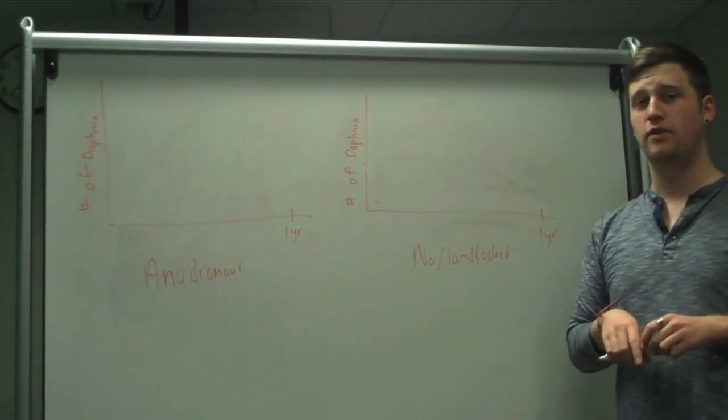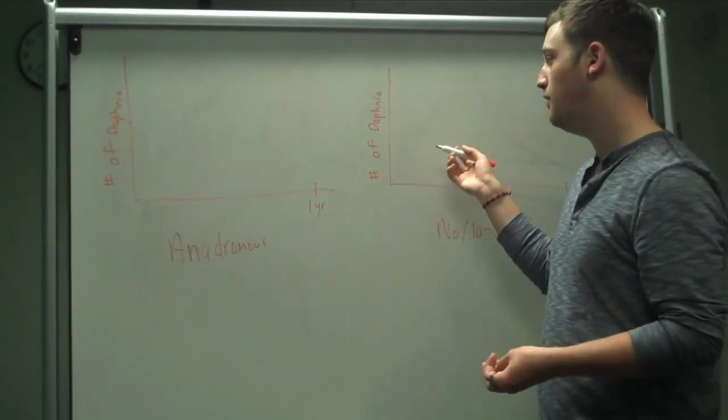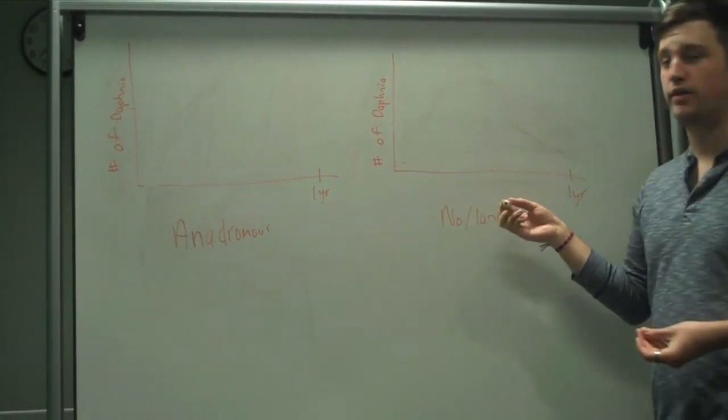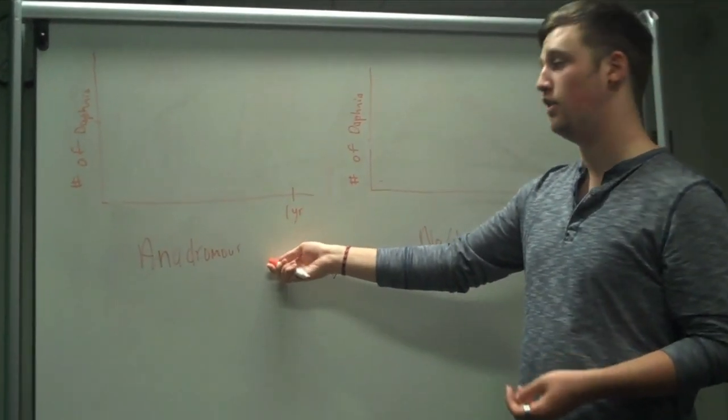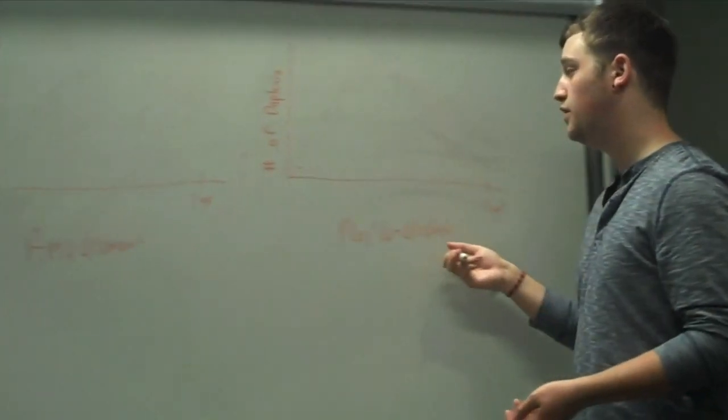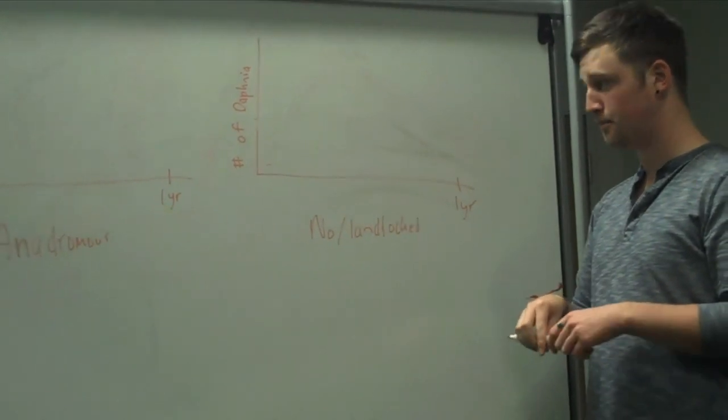Okay, so let's make a visual representation of all this. I have two graphs here. The y-axis on both is the number of Daphnia, and the x-axis is time, which goes to exactly one year. And this graph is representing Daphnia that come from anadromous alewife lakes. And this graph represents the lakes that have no alewives or landlocked alewives.